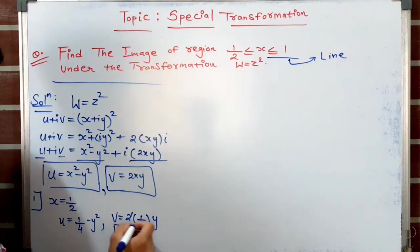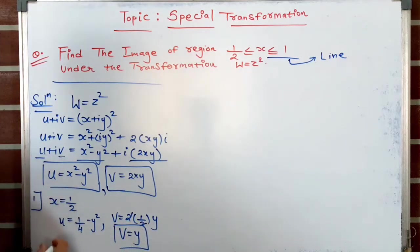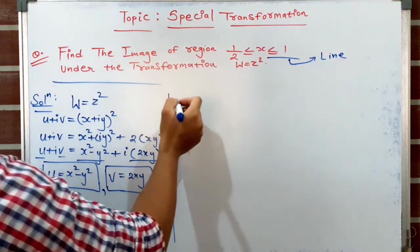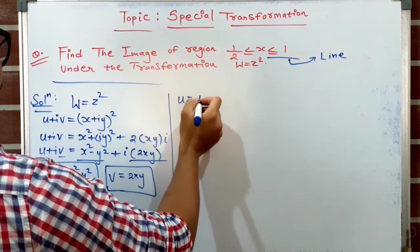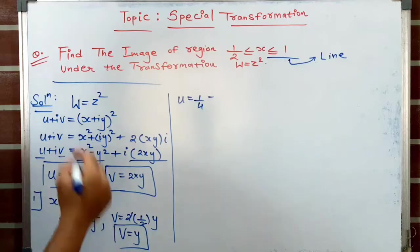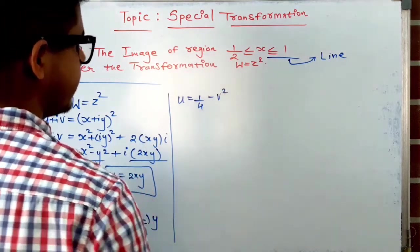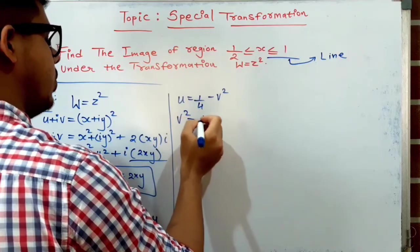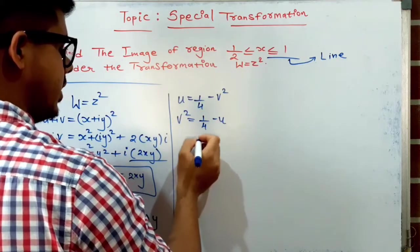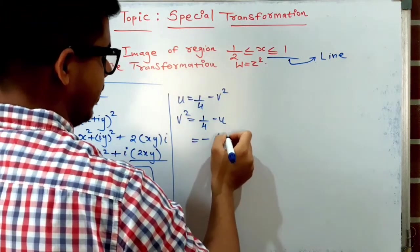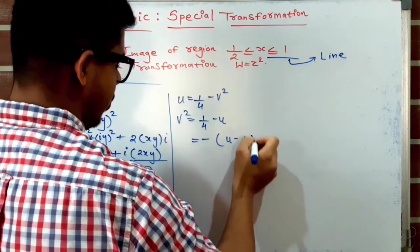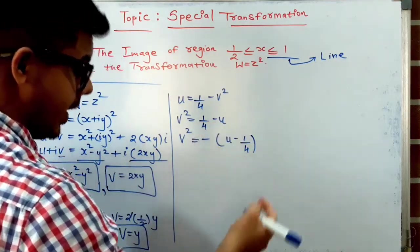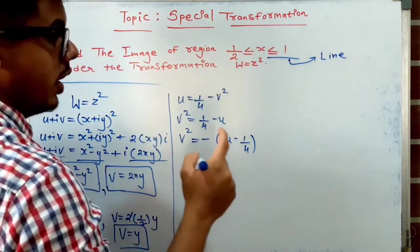We substitute y = v into the equation for u: u = 1/4 − v². Bringing v² to the left-hand side: v² = 1/4 − u, which can be written as v² = −(u − 1/4). This is the equation of a parabola.